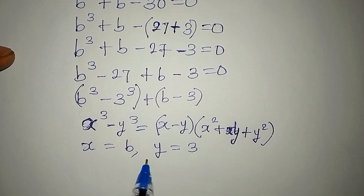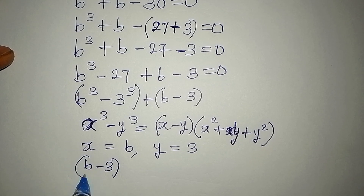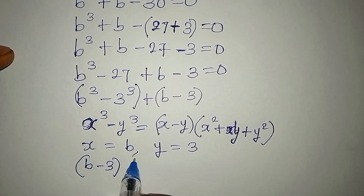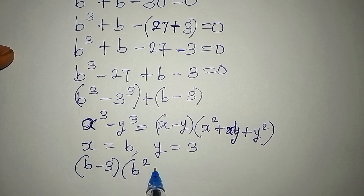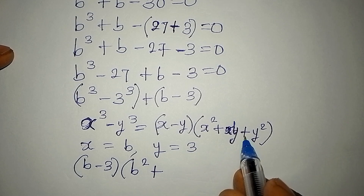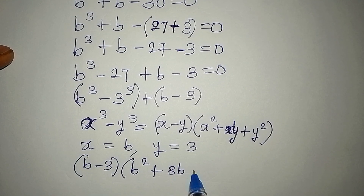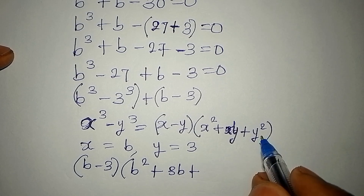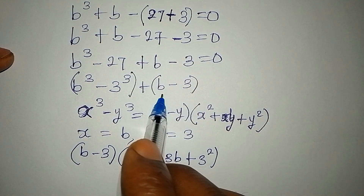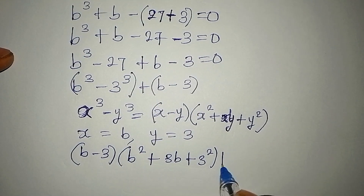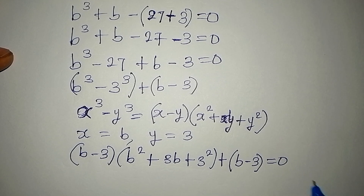Substituting x = b and y = 3: (x - y) becomes (b - 3), x² becomes b², xy becomes b times 3 which is 3b, and y² becomes 3² = 9. So we have (b - 3)(b² + 3b + 9), plus (b - 3), all equal to zero.